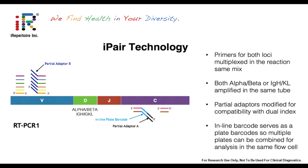The technology is based on Amplicon Rescue Multiplex PCR — a nested reverse transcription PCR with outside and inside primers. Included on the inside primers is an inline plate barcode, which allows us to barcode multiple plates and stack them into the same sequencing run. We made modifications for single cell: we modified the primer set so that both loci — alpha and beta, or IG heavy, kappa, and lambda — can be amplified under the same conditions and co-amplified in the same well at low reaction volume. We also swapped adapters to be compatible with Illumina dual indexing, which allows us to map back to each individual well of the PCR plate.